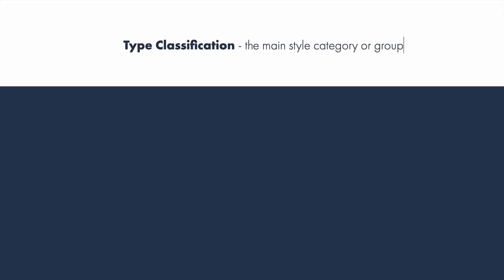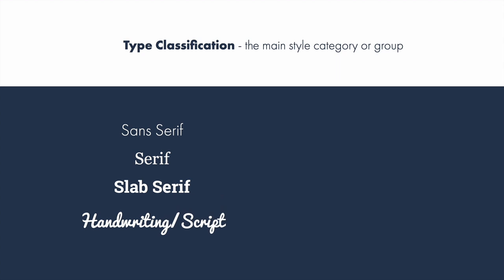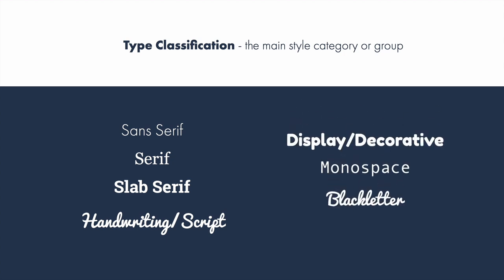So first we have type classification. This is the main style category or group. The most common ones used on the web for UI designs are sans serif, serif, slab serif, and handwriting or script. There's also display, decorative, monospace, and black letter. There are others, but those are more commonly used in graphic and print design where the focus is more on aesthetics rather than readability, usability, responsiveness, and interaction.